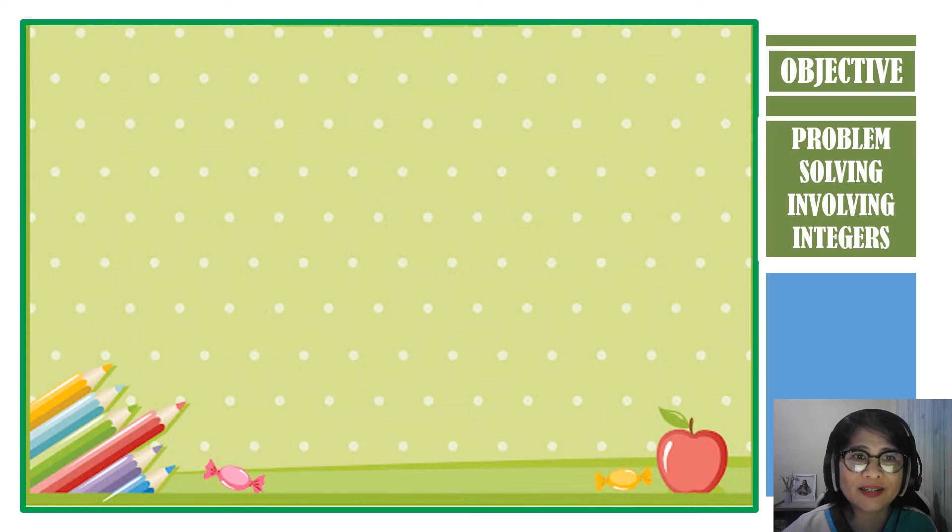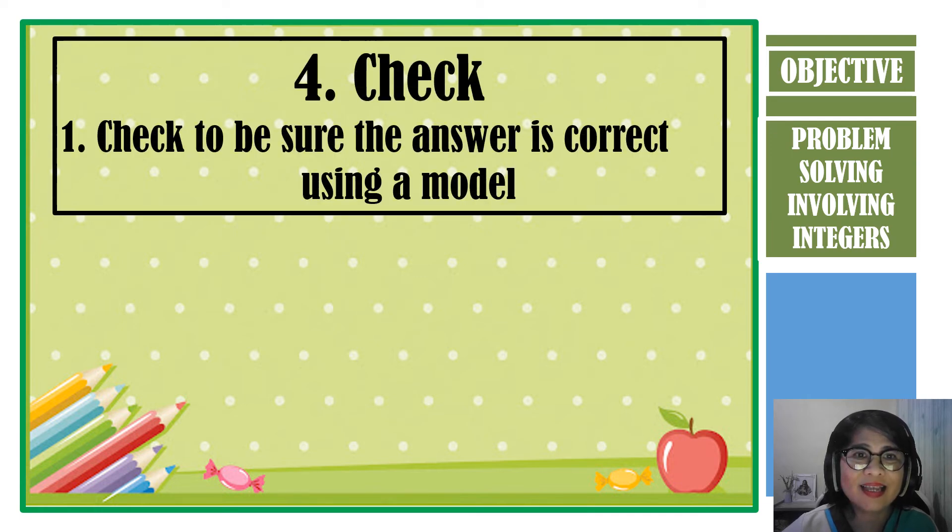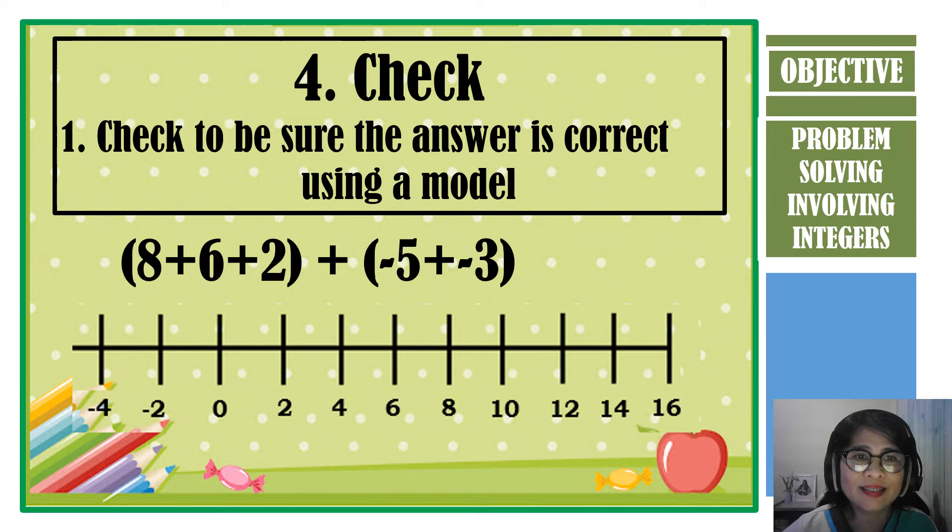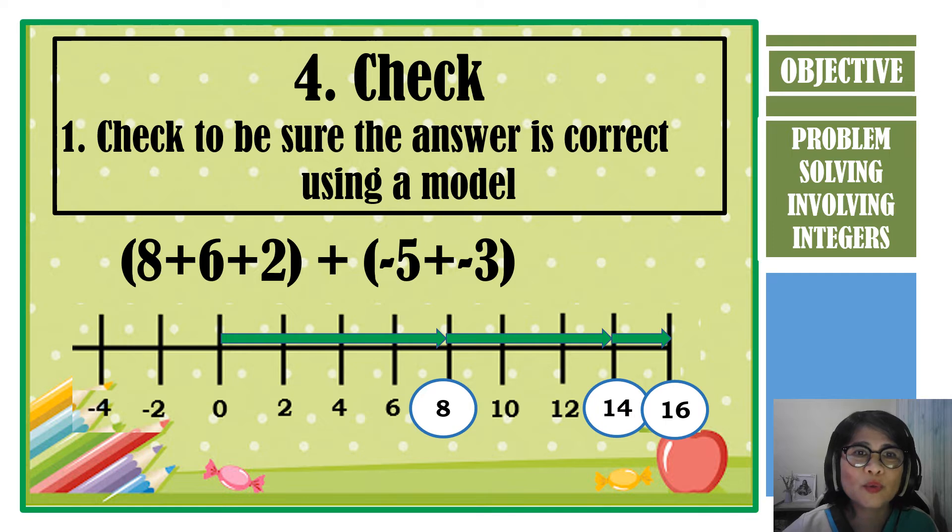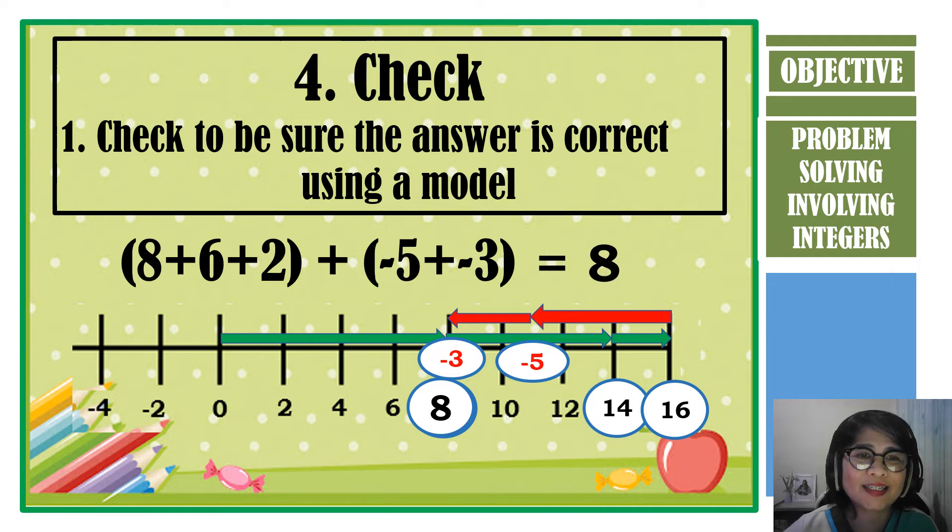To check if the answer is correct, let us use the model number line. Let us move forward to add positive 8 and positive 6 and positive 2. We are now on positive 16. And then let us move backward for negative 5 and another 3 for negative 3. We stop at 8. So therefore, our answer is correct. The answer is 8.